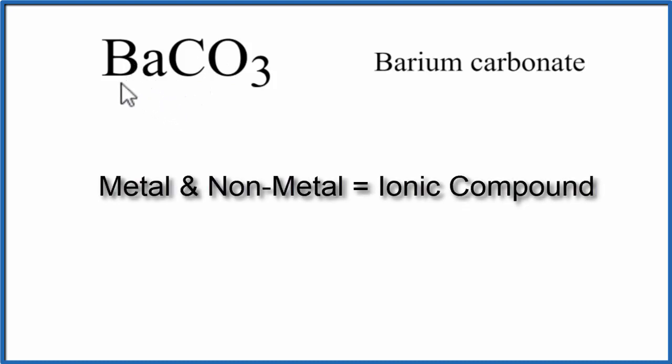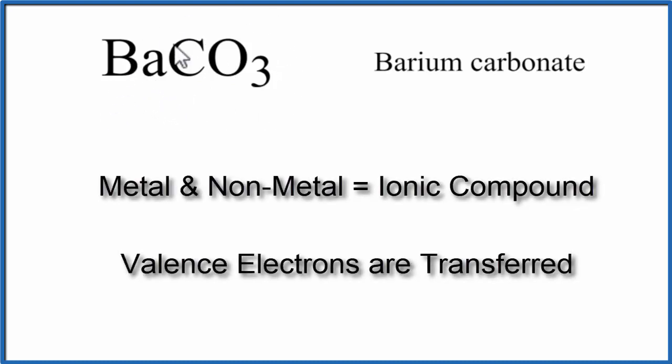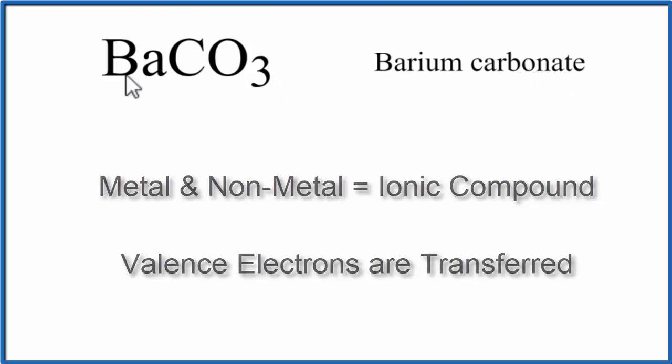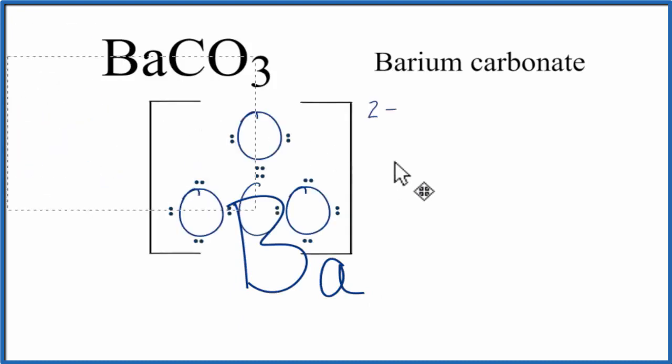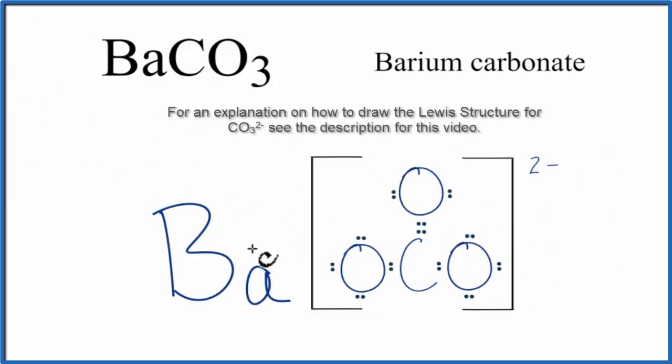In an ionic compound, the metal will transfer valence electrons to the non-metals. This is the carbonate polyatomic ion. So we write Ba, and then we'll put the carbonate ion right next to it.